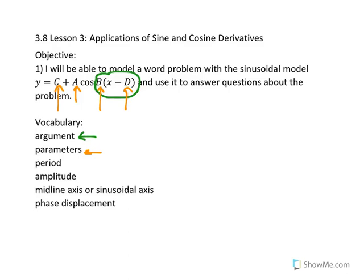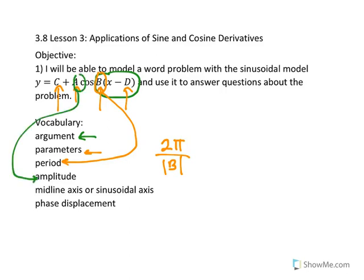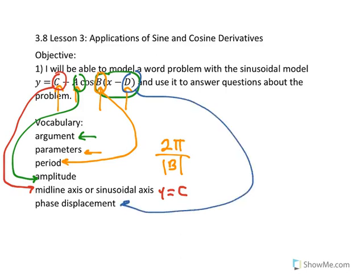The parameter b has an impact on the period of the function. The period of the model will be 2π divided by the absolute value of b. The parameter a has an impact on the amplitude of the graph. The parameter c determines the midline or sinusoidal axis, which is the horizontal line y = c. And the parameter d determines the phase displacement.